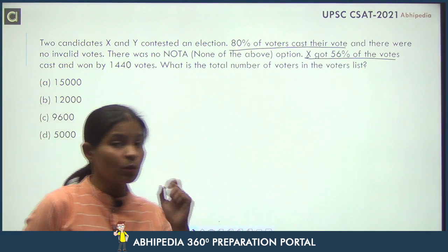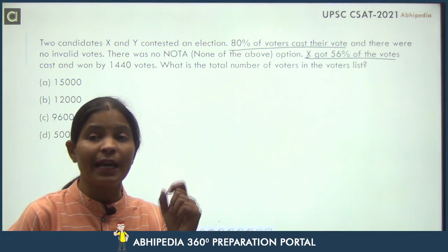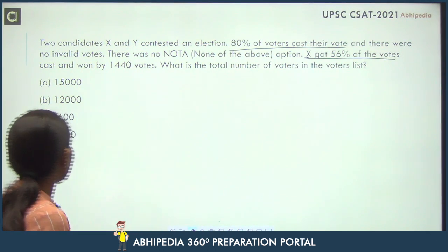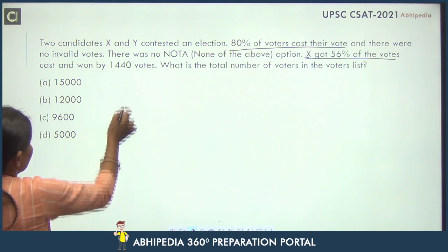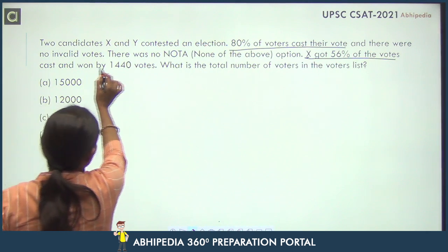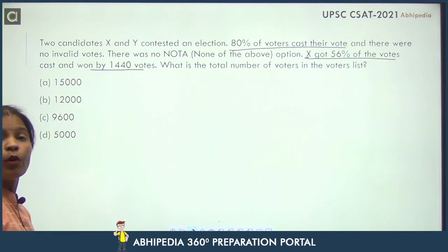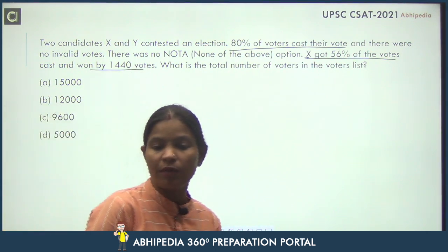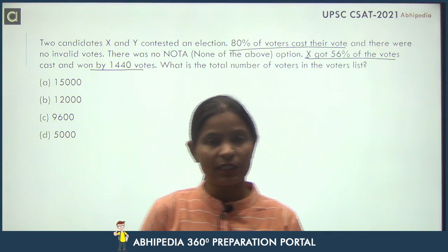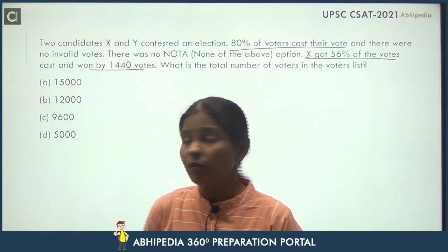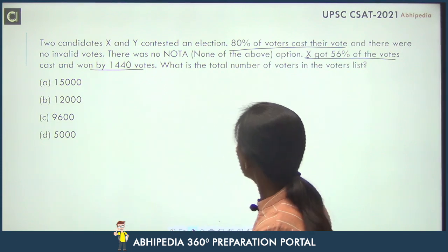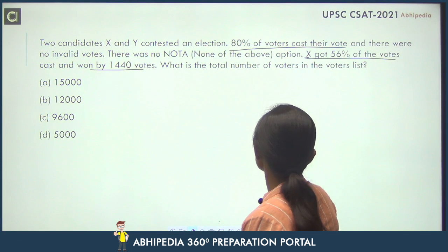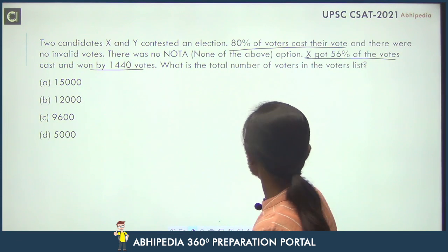Ab X ko jab 56% votes mile hain, that means X is the winner. And X won by 1440 votes — kitne votes se election jita hai X? 1440 votes se. What is the total number of voters in the voters list?